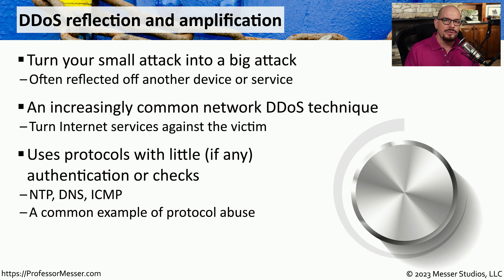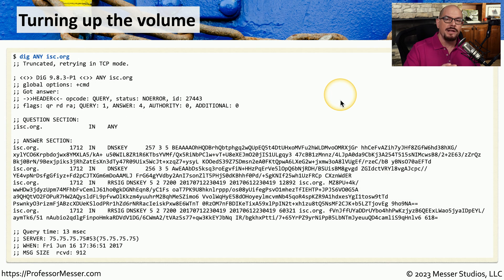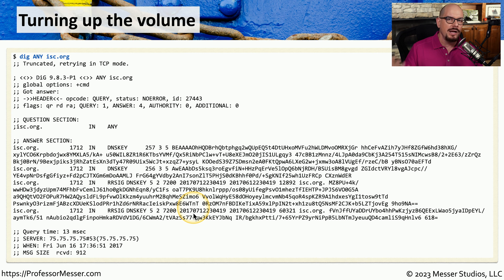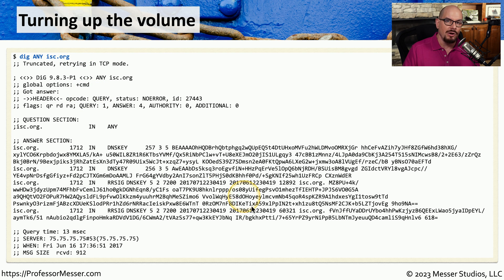This amplification is possible because attackers take advantage of internet services available to anyone. For example, when you request information from an NTP server, you generally receive back more information than you requested. The same thing applies to DNS requests, ICMP requests, and other common protocols. Here's a common example of DNS amplification using the DIG command requesting any information over a particular domain — in this case, isc.org. You're sending very little information out, only 15 characters, but the results returned are about 1,300 characters, effectively amplifying the request by about 86 times.